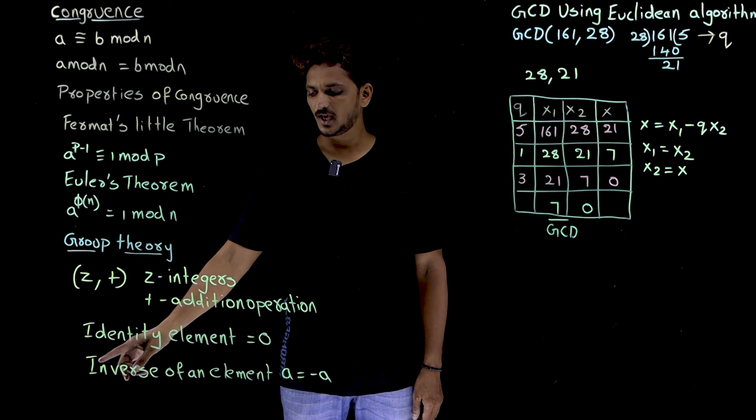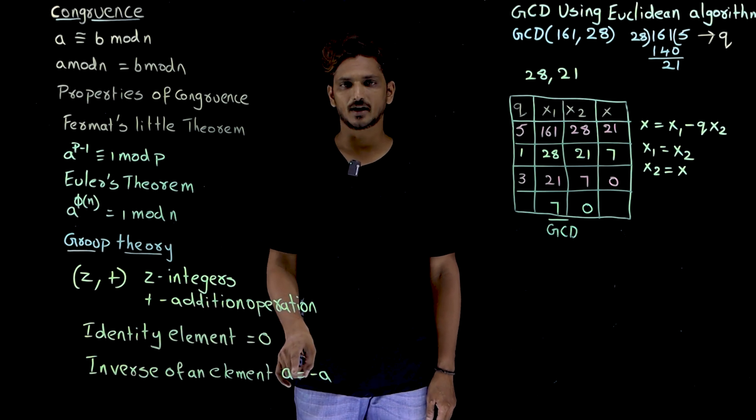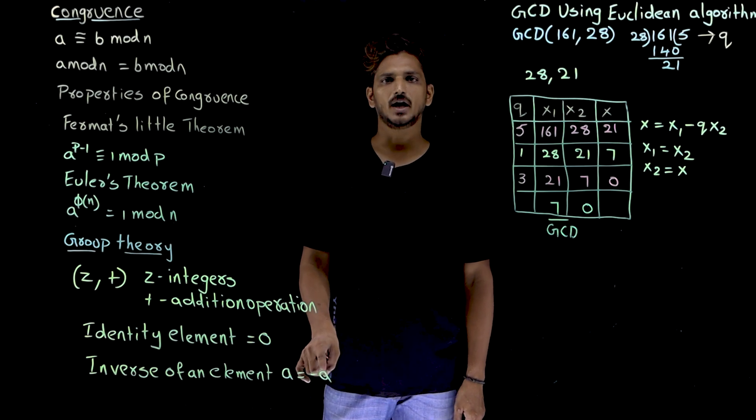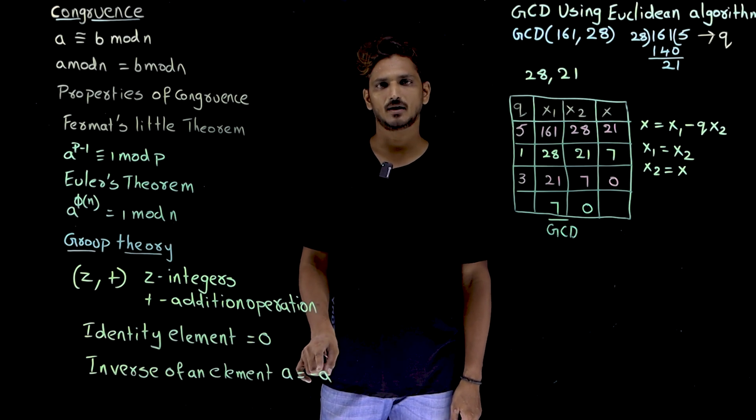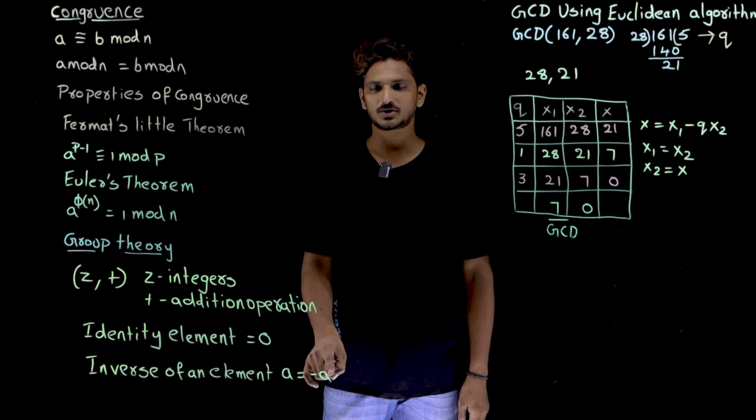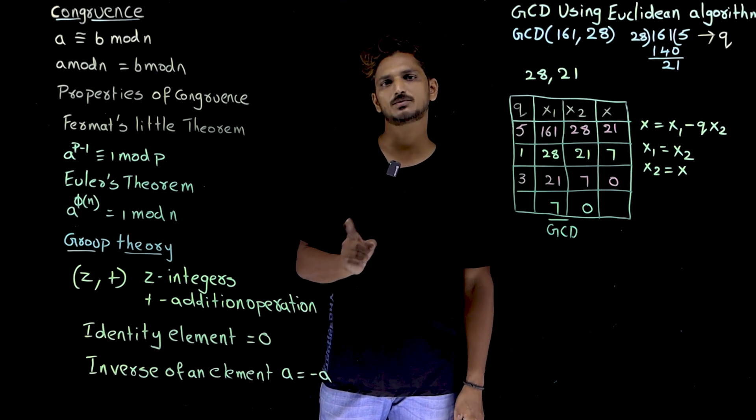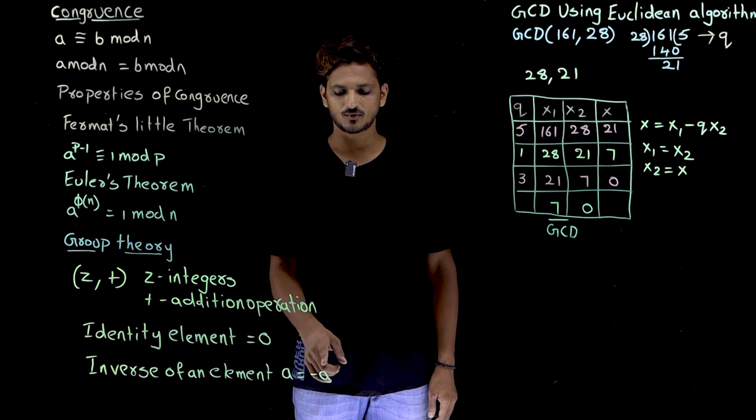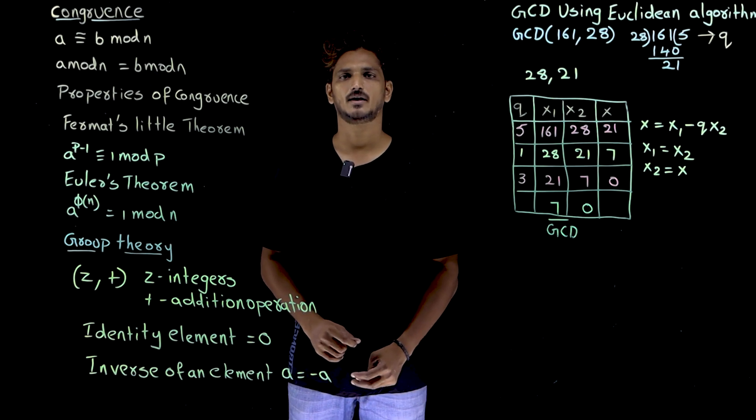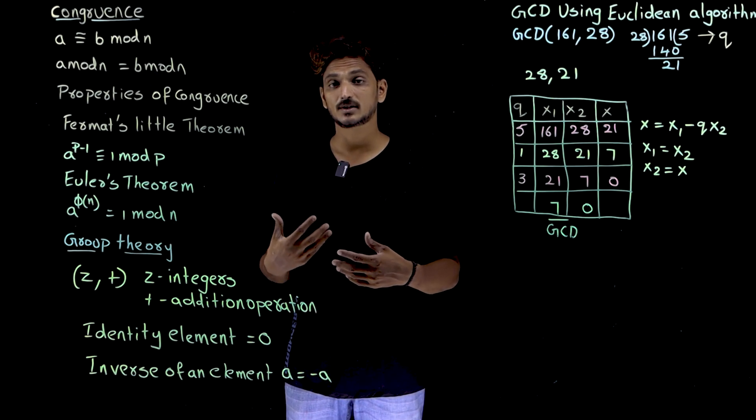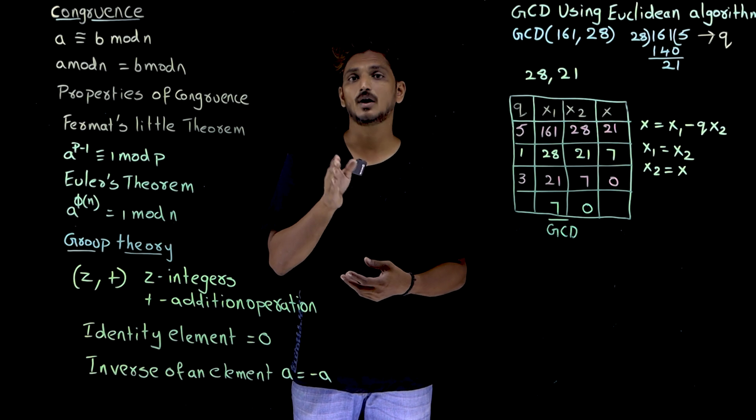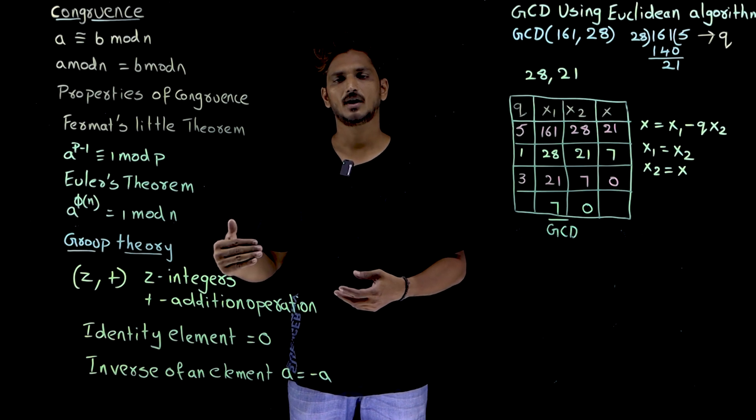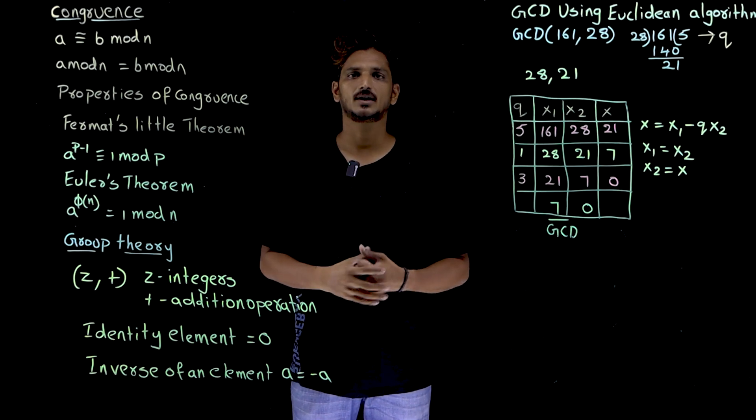Similarly, inverse element is also identified. Inverse of an element A, 10 is an element, what is the inverse of 10? Minus 10 is the inverse of the element 10. Means 10 plus minus 10, you are going to get the identity element. 11 plus minus 11, you are going to get the identity element. That is why for A, inverse of A is minus A. Similarly, we have discussed there addition modulo operation, multiplication operation, multiplication modulo operation examples on group theory. So please watch those classes and come back here. We are going to use all these concepts in our coming classes.